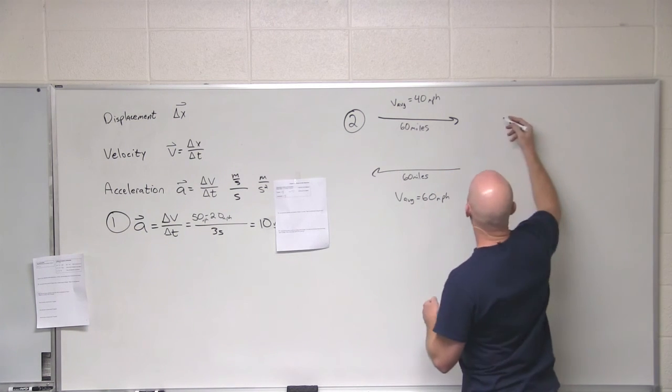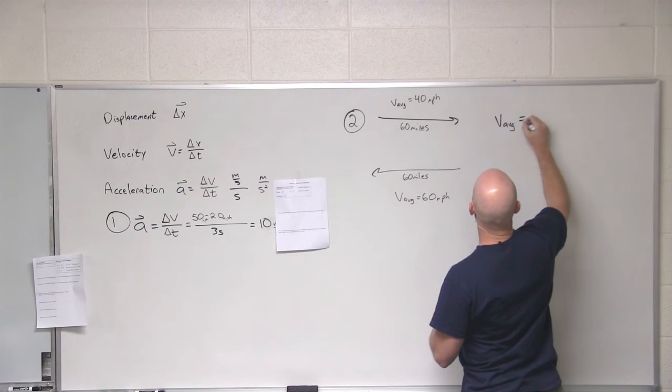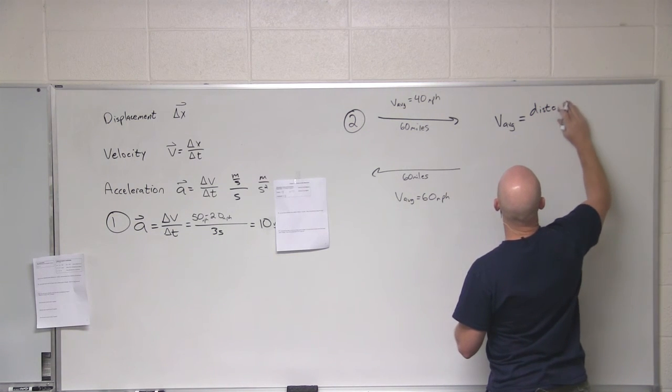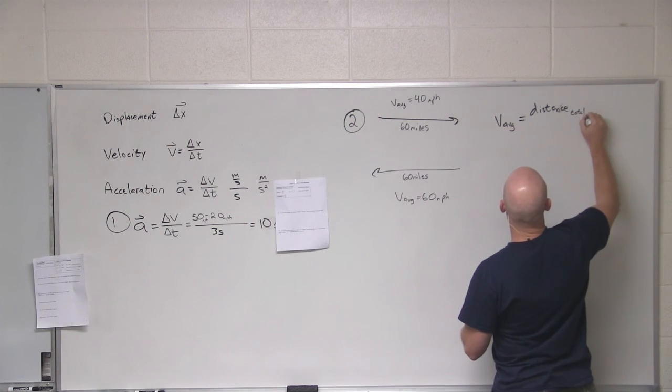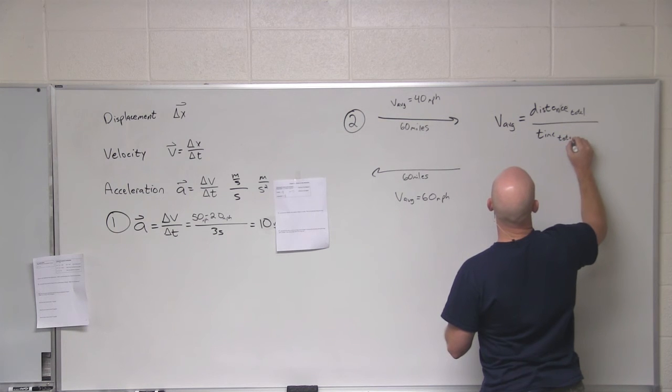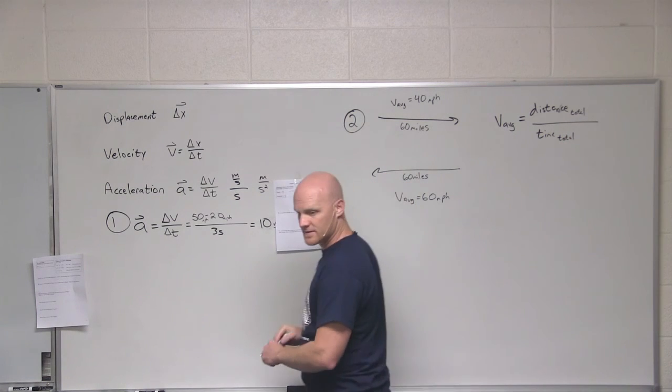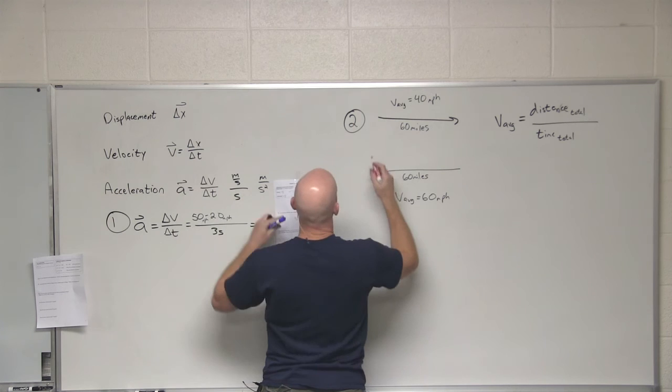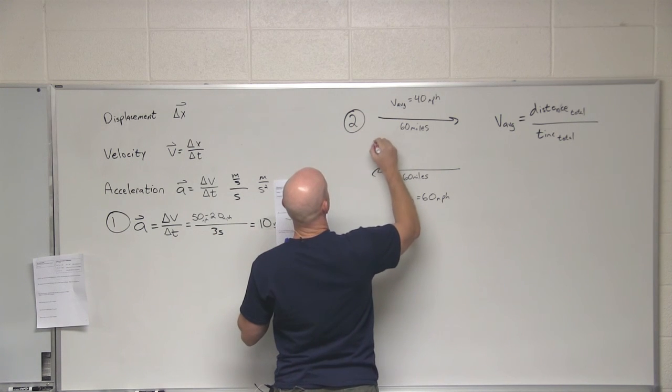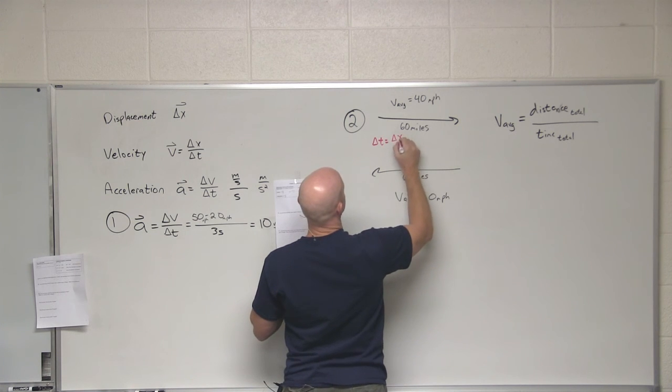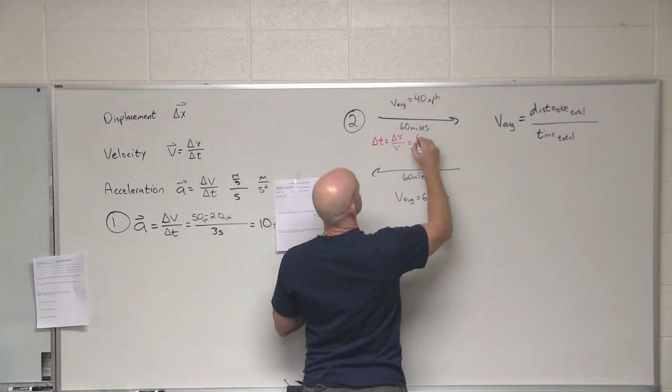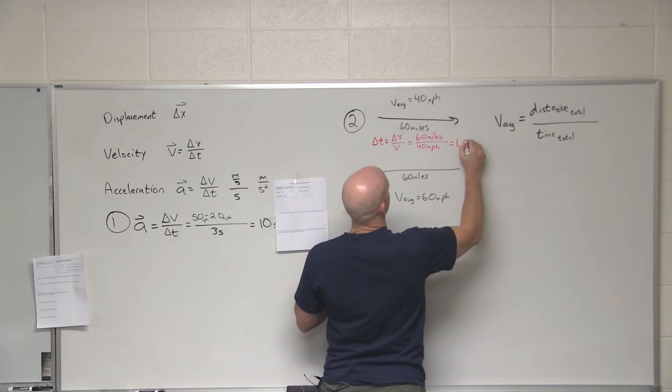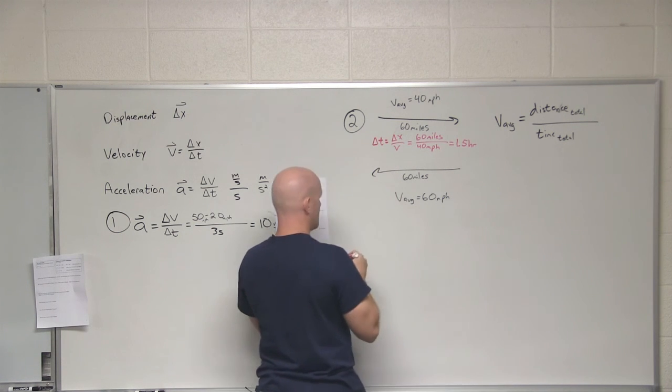If we look here, to get our average speed, we want to take the total distance over the total time. We can divide that into two parts. Velocity is delta x over delta t. If we rearrange our definition of velocity, we can see that delta t equals delta x over v, which in this case is 60 miles over 40 miles per hour, and that's going to take us an hour and a half. Same thing for the way home: 60 miles at 60 miles per hour, the time here is going to be one hour.